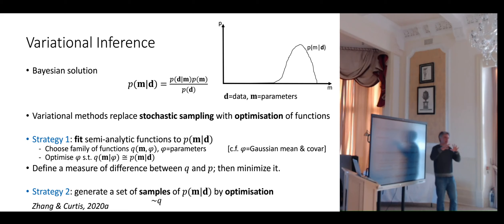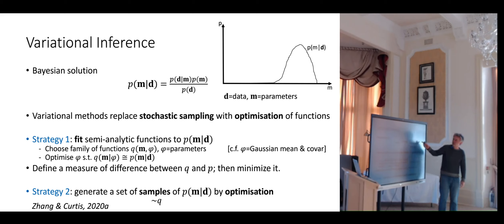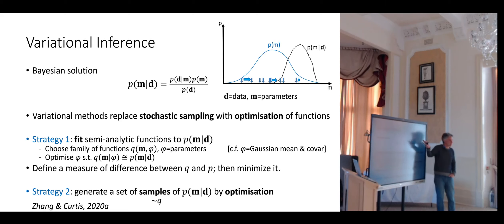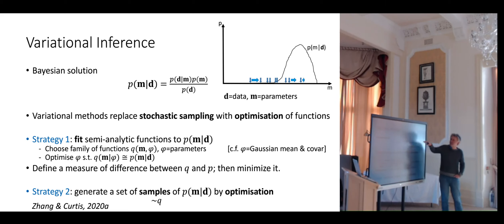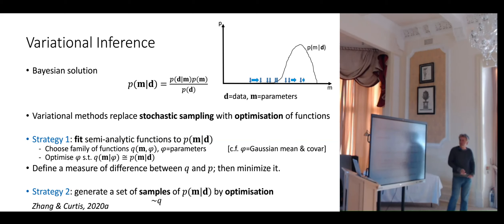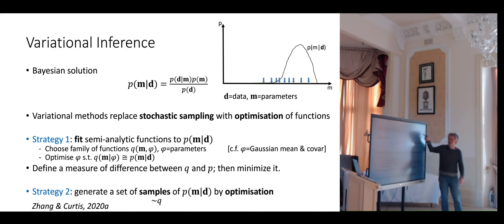Here's an example of the second strategy. Starting with random samples from the prior, I don't need to know that initial distribution analytically — I only need to be able to draw samples from it. I then look at the difference between these samples and the target distribution, decide how to move them, and move the family of samples in a way that optimizes their distribution so they end up distributed according to the posterior.